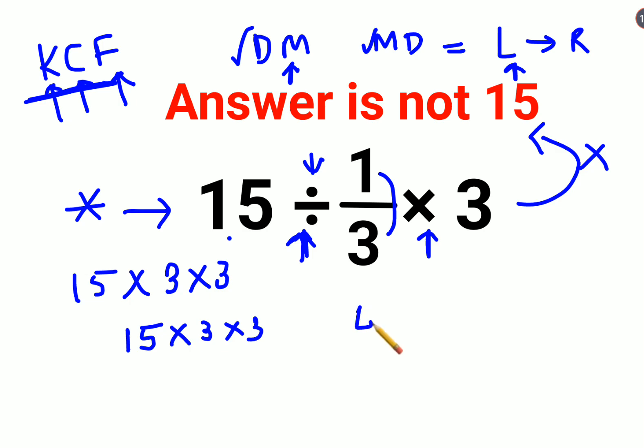But 15 times 3 gets you 45, times 3 gets you 135. So the answer for this particular question is 135.